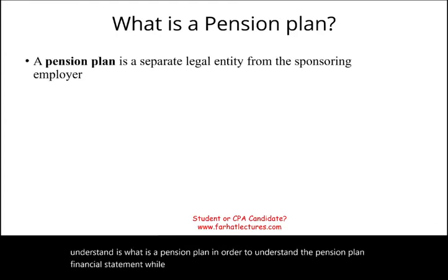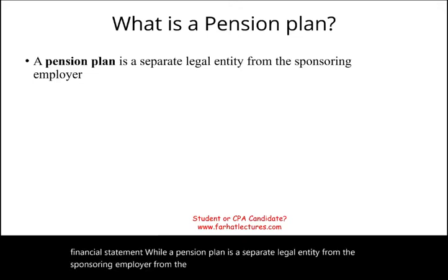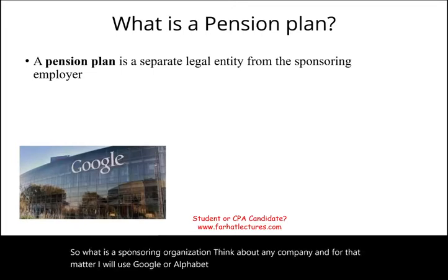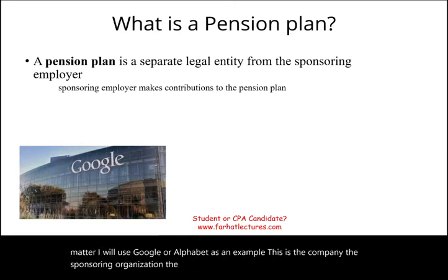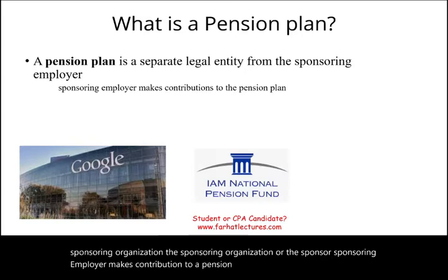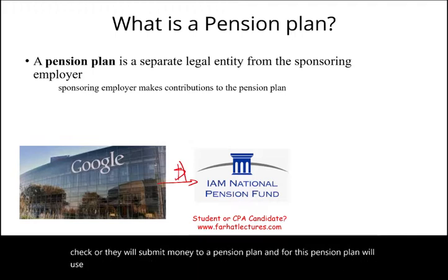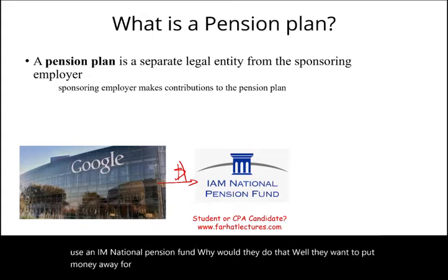A pension plan is a separate legal entity from the sponsoring employer, from the sponsoring organization. Think about any company — I'll use Google or Alphabet as an example. The sponsoring organization, or sponsoring employer, makes contributions to a pension plan. Google will submit money to a pension plan — in this example, I AM National Pension Fund — to put money away for their employees when they retire.